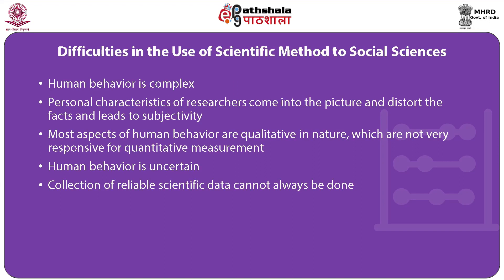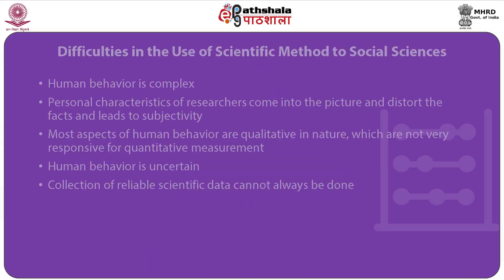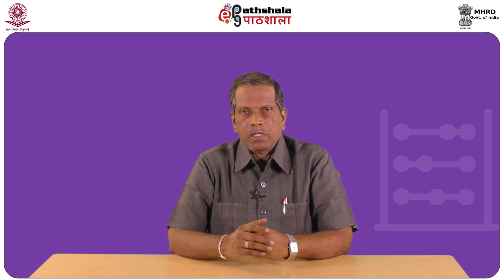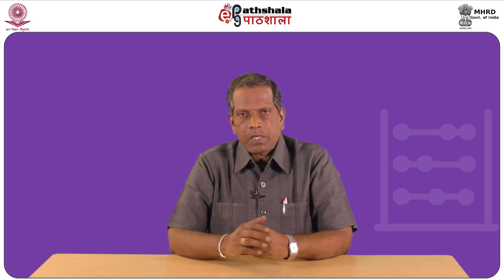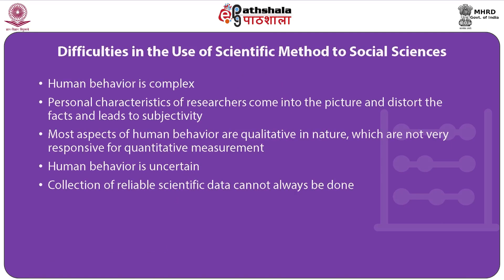The third difficulty is that most aspects of social life, social relations, and human behavior are qualitative in nature, which are not stringently amenable to quantitative measurement. Next, human behavior is not uniform and predictable — it is more often uncertain. All people may not behave the same way in similar circumstances, or one individual may behave differently under similar circumstances, making studying human behavior difficult. Another difficulty is that application of the experimental method to study human behavior is very difficult, and thereby reliable and scientific data cannot always be collected.